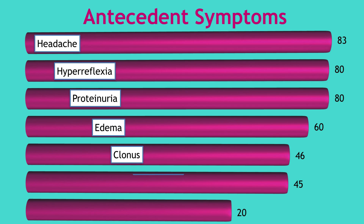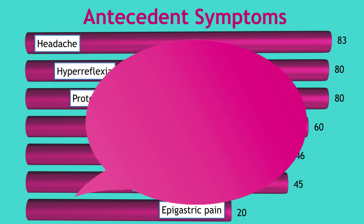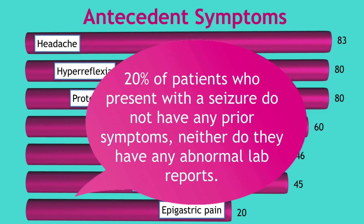The other common antecedent symptoms are edema, clonus, visual disturbances, and epigastric pain because of stretching of the liver capsule. Having said that, it is important to remember that 20% of patients who present with an eclamptic seizure do not have any prior symptoms, neither do they have any abnormal laboratory reports.